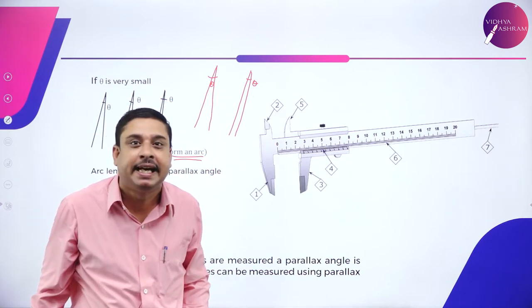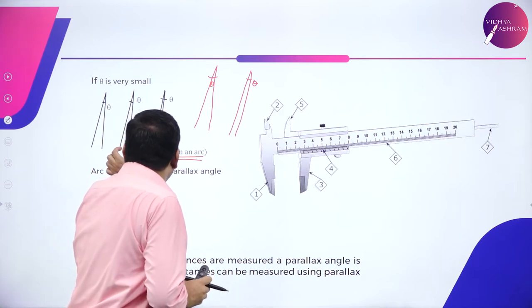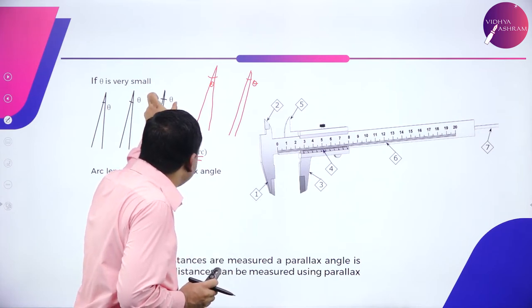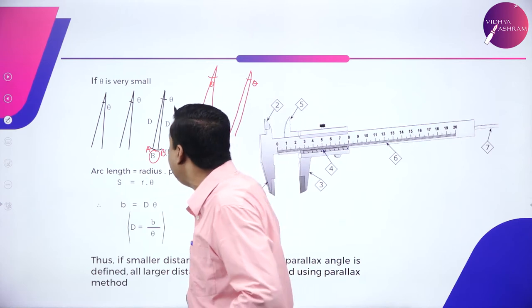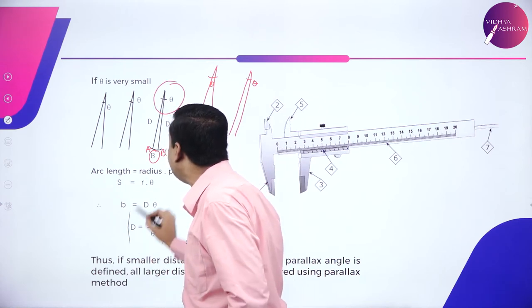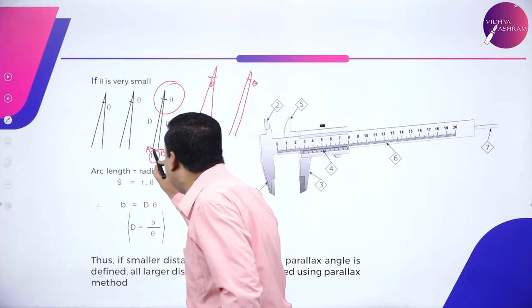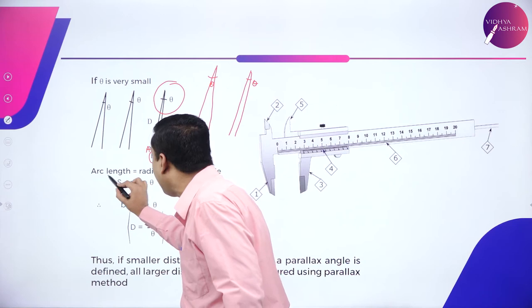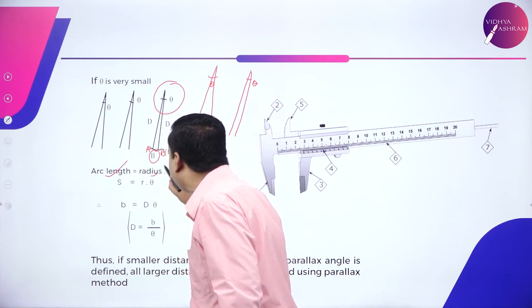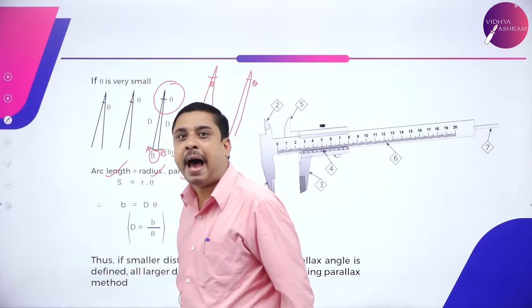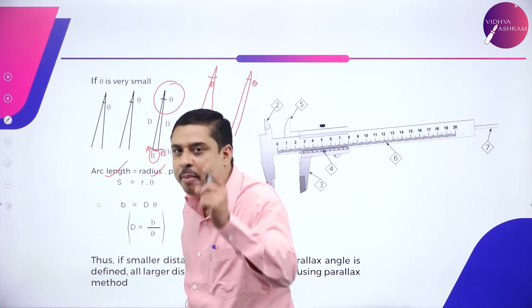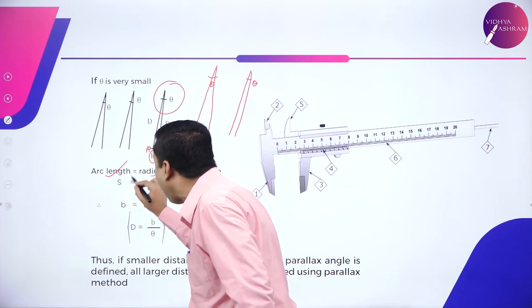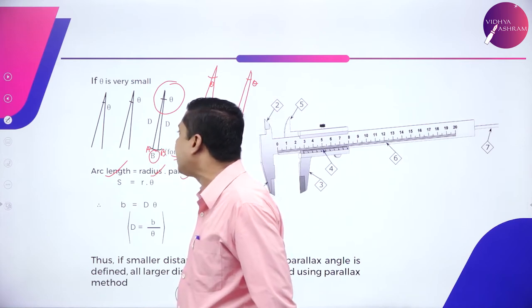the distance between the base of the two lines shrinks. As theta decreases, there is a decrement in the base of the two lines. And for the least possible angle, for the smallest possible theta, now the base becomes an arc of length B. So, mathematically we told, arc length is the product of radius and parallax angle.